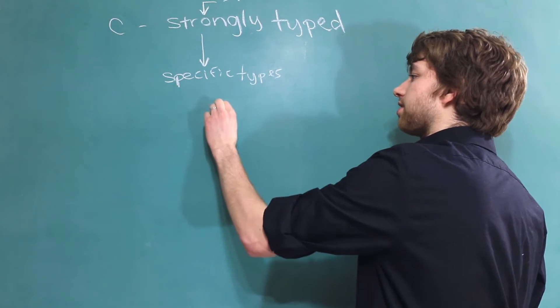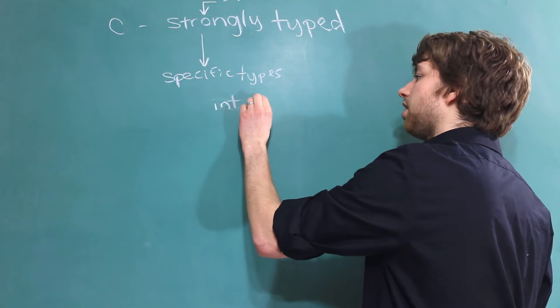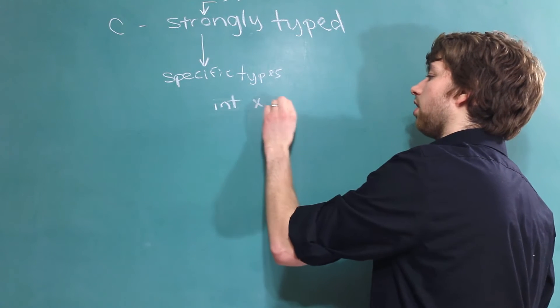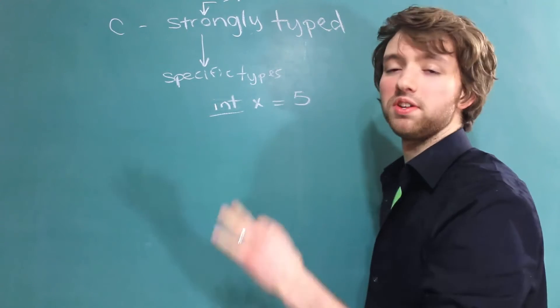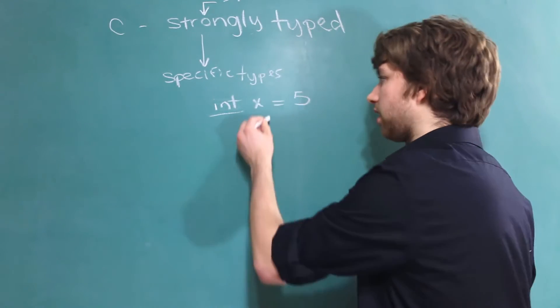So C is strict in the sense that when we declare variables we have to say what type they are. And once we say what type they are they're always going to be that type, the variable that is.